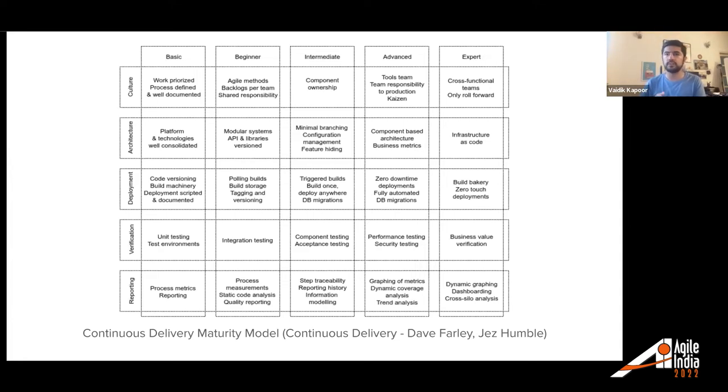This framework highlights the importance of different aspects of continuous delivery to turn the concept into execution. Each of those rows is an area that is important for practicing CD, and the columns from basic to expert are levels of maturity. You start from the left and move towards the right on each of the rows, hence maturing your CD practice. An important callout is the first row, which is culture. Maturing in most engineering practices is not just about how you use tools and technologies, but also your ways of working. With a framework like this, you can clearly define intermediate steps and use them as internal or external benchmarks. This was a good direction and made sense to us, but we couldn't take this to our teams because it was too high level.